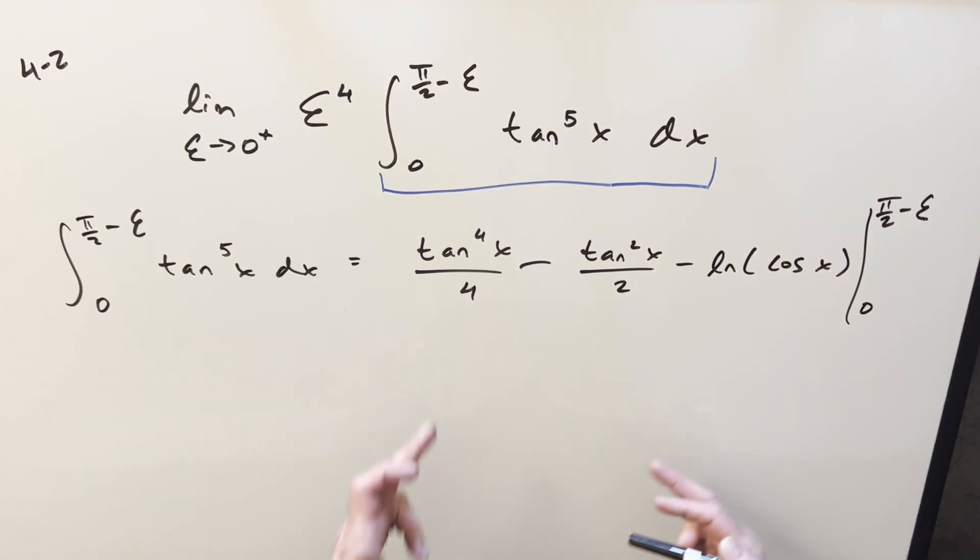So first, looking at 0, tan at 0 is 0, so this goes away. Cosine at 0 is 1, but natural log of 1 is 0, so everything is 0 at 0. Don't worry about that.